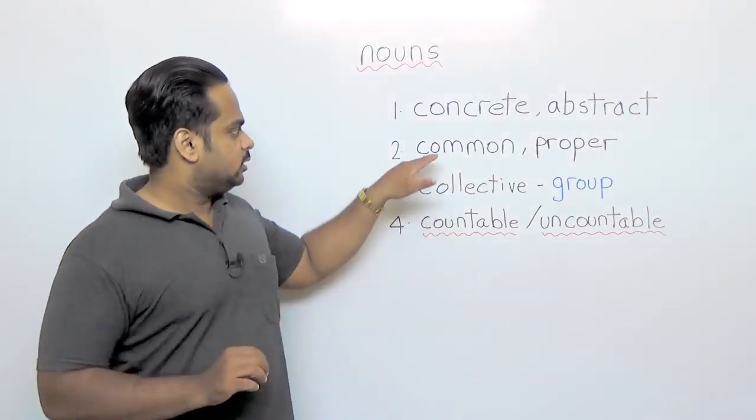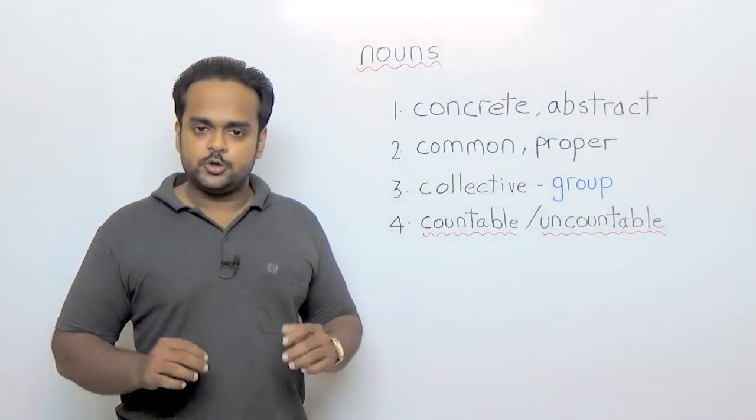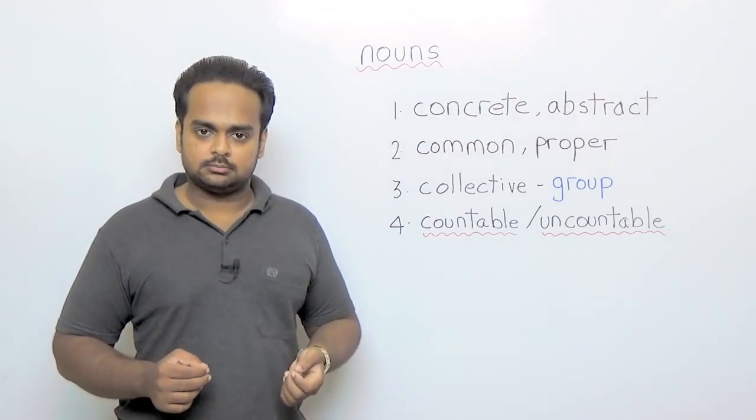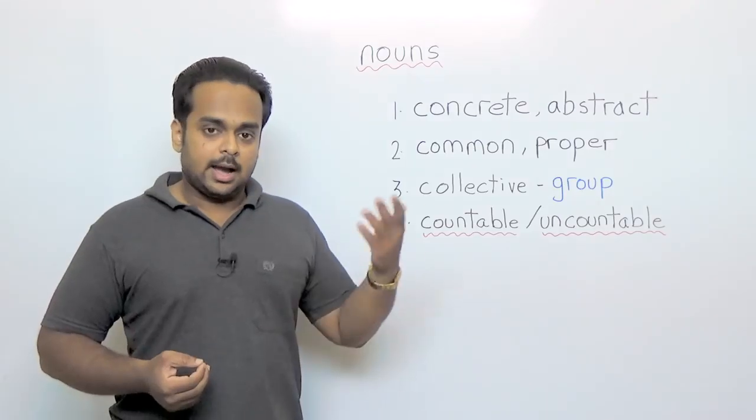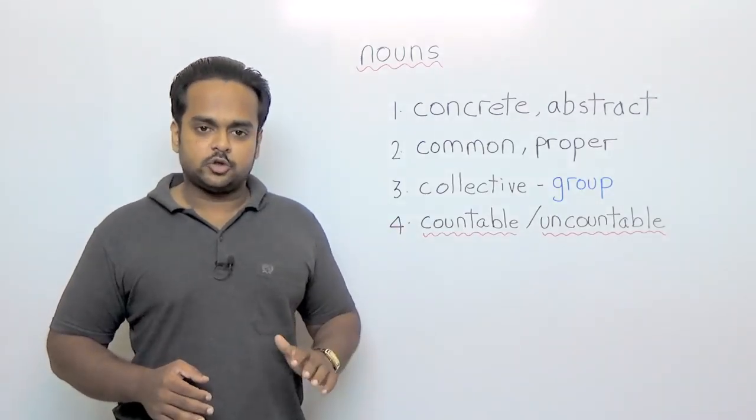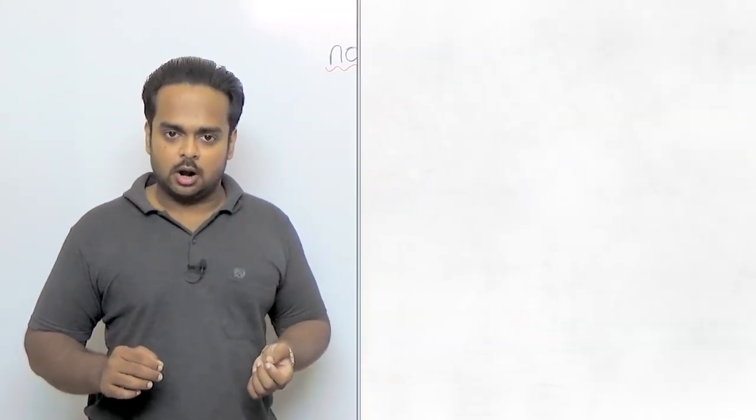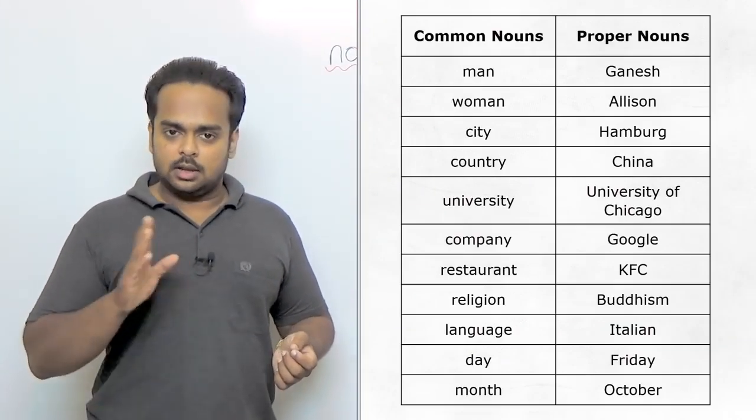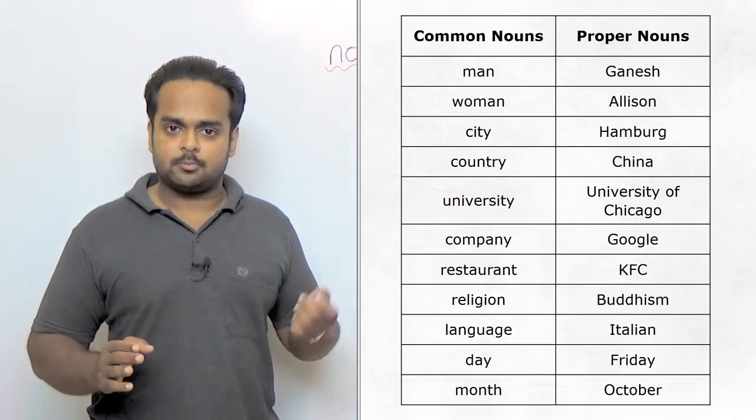Let's now talk about common and proper nouns. A common noun is a general noun and a proper noun is the name given to a specific individual. For example, in this chart, all the nouns on the left are common nouns and all the nouns on the right are proper nouns.